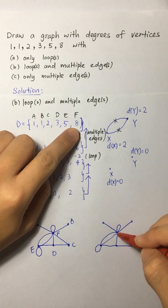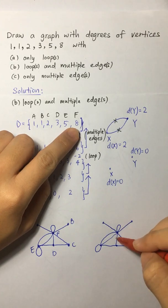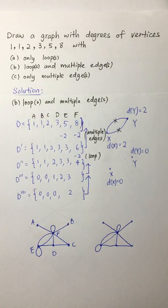And the last one is 8. 1, 2, 3, 4, 5, 6, 7, 8. So we have 8 here. Now that completes our graph.